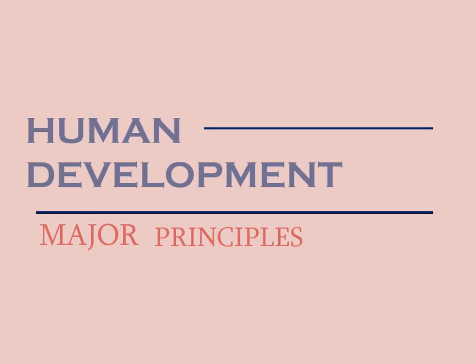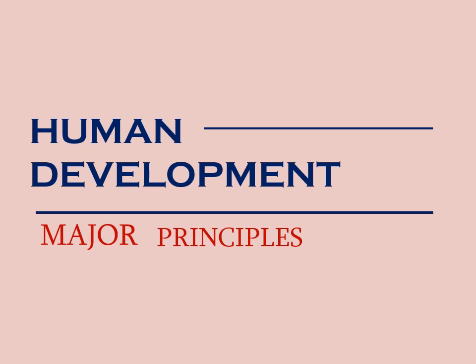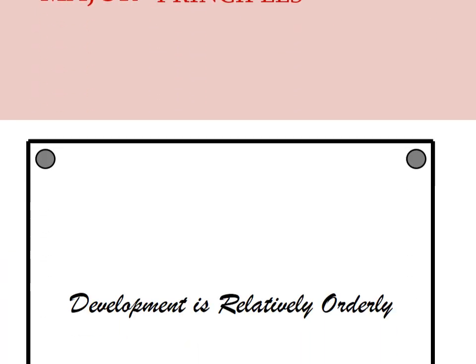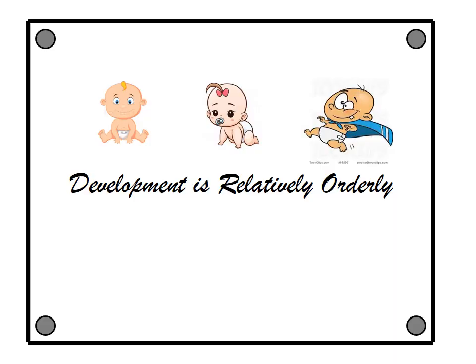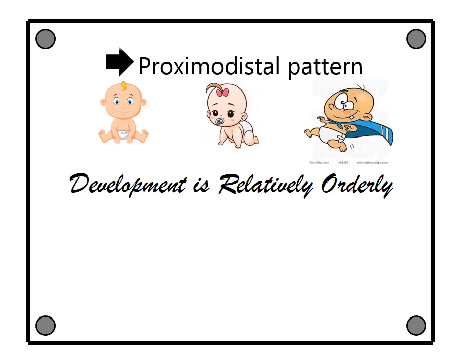Human Development Major Principles. Development is relatively orderly. For example, Naskiel and Ken will learn to sit, crawl, then walk before they can run. The muscular control of the trunk and arms comes earlier as compared to the hands and fingers. This is the proximodistal pattern.